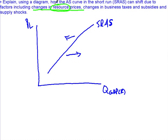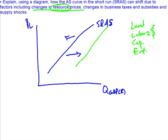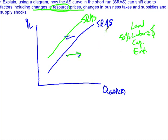The first determinant is changing resource prices. The resources for production are land, labor, capital, and entrepreneurship. If any of these prices change — say resource prices go up — it becomes more expensive to run a business. If you have to pay labor fifty percent more, that decreases the short run aggregate supply, shifting it left. If capital becomes a lot cheaper, that increases the short run aggregate supply, shifting it right.